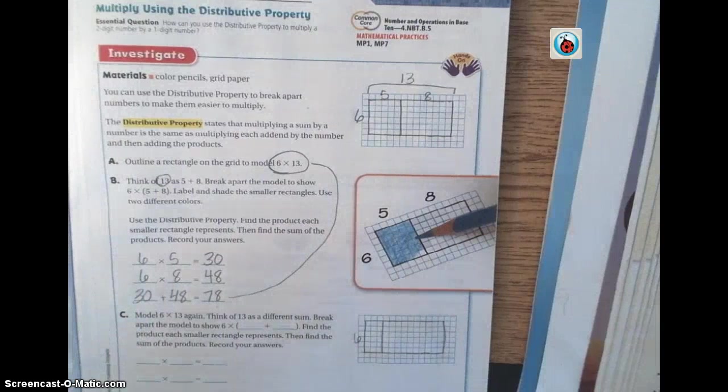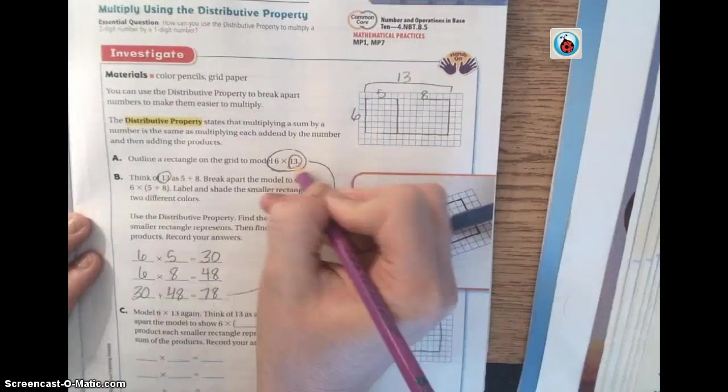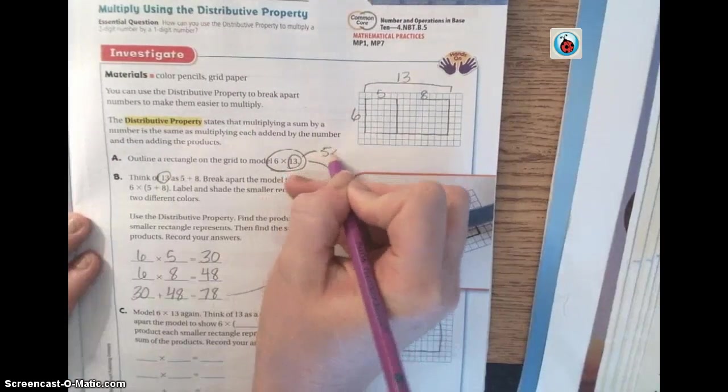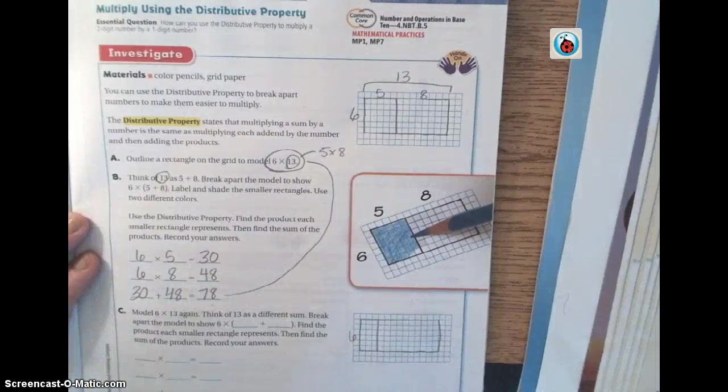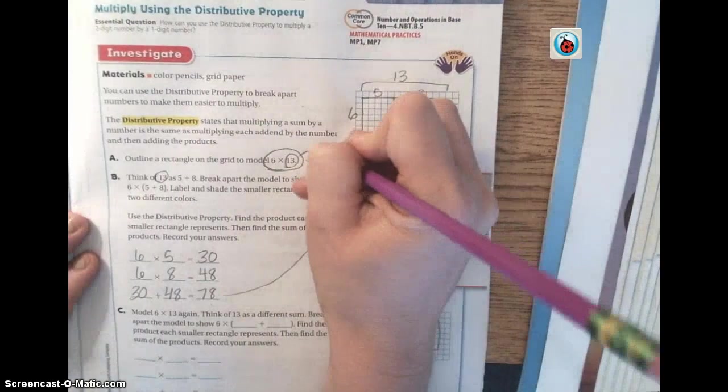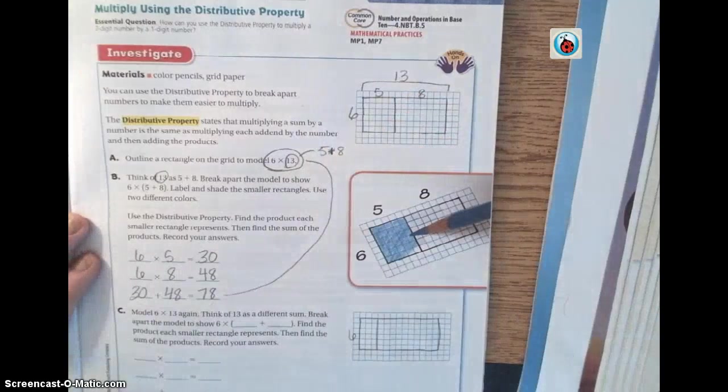So we now know that if we come back up here, 6 times 13 is what? 78. We did the same exact problem. We just broke down 13. We broke this 13 down into 5 plus 8.